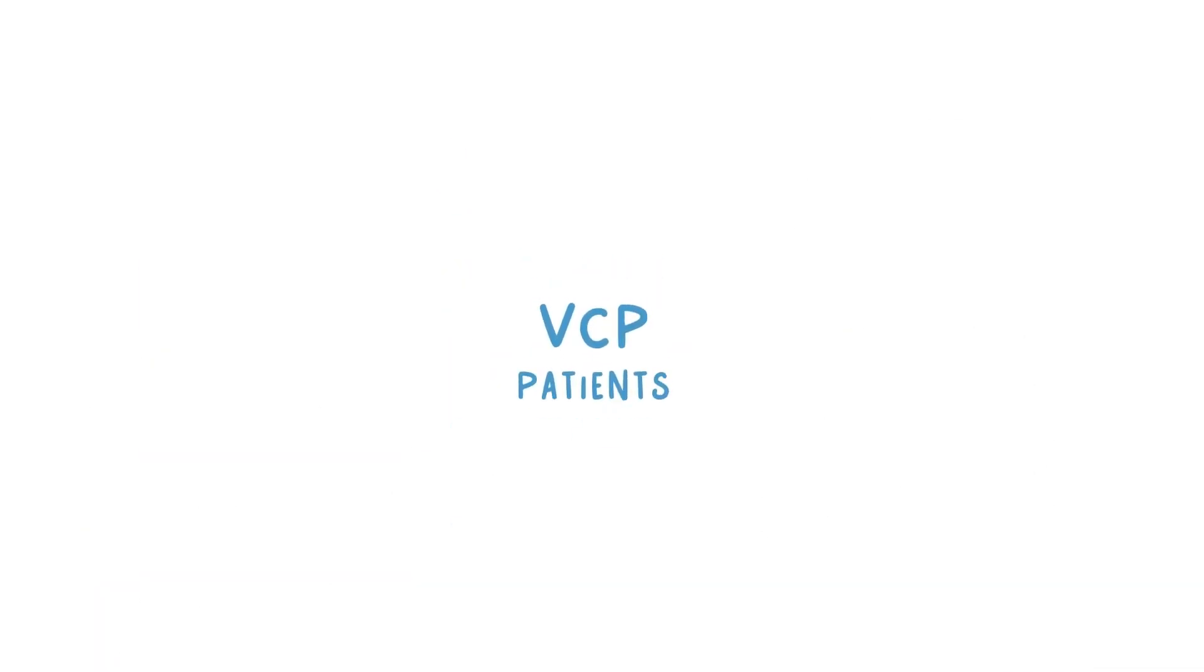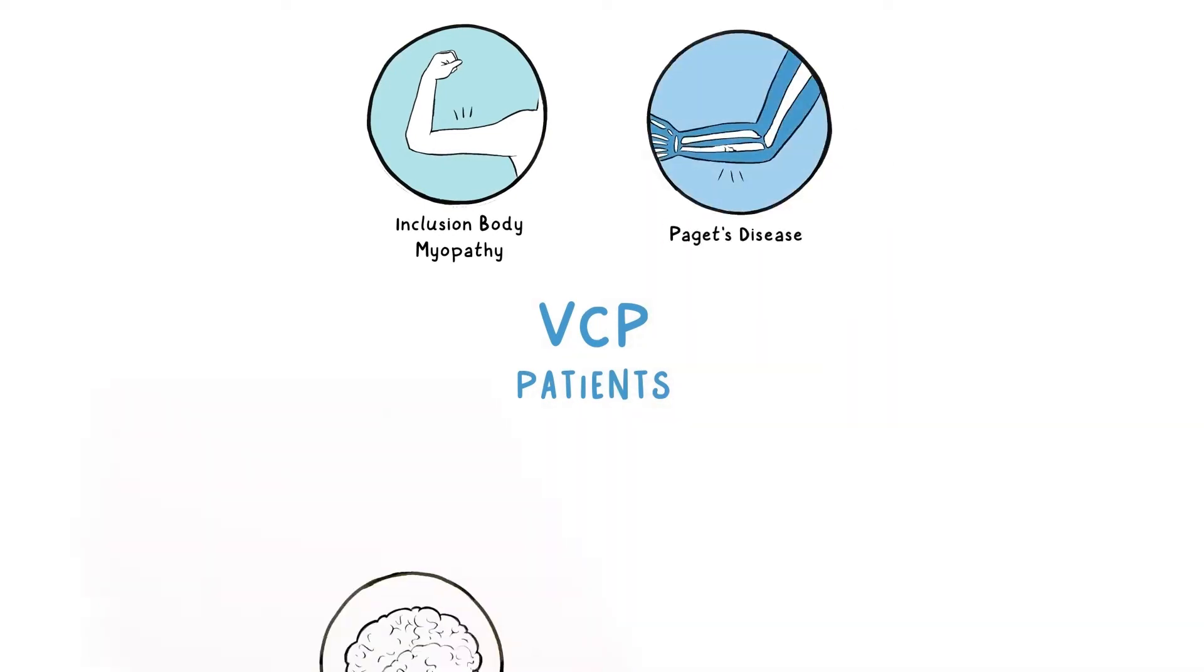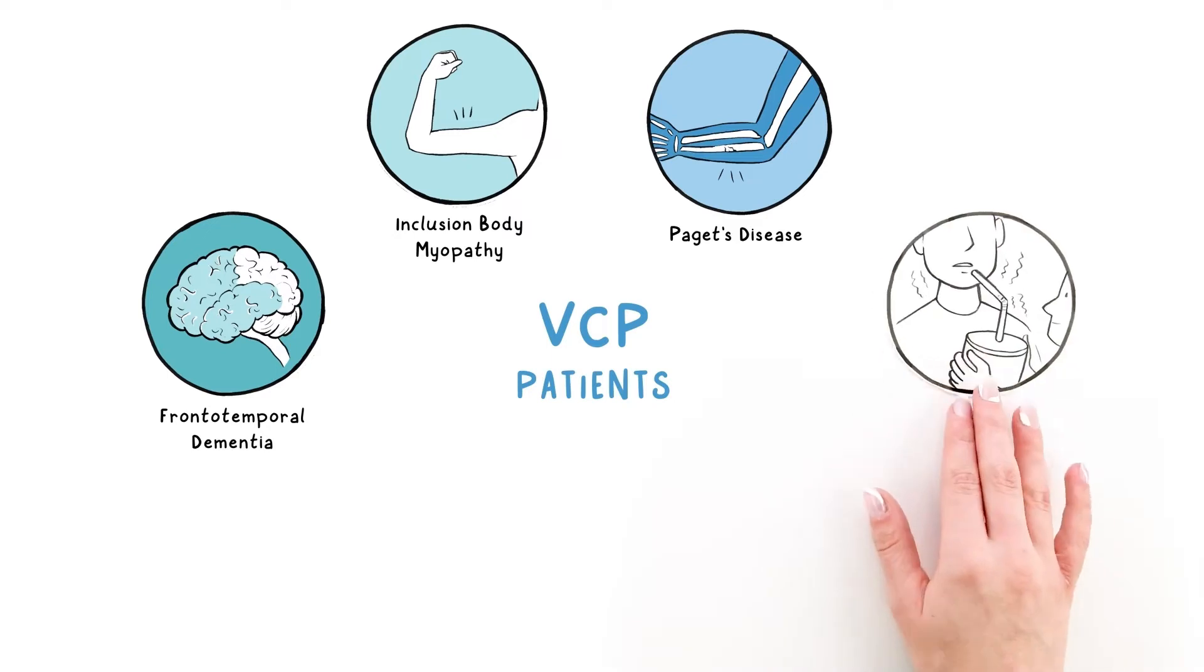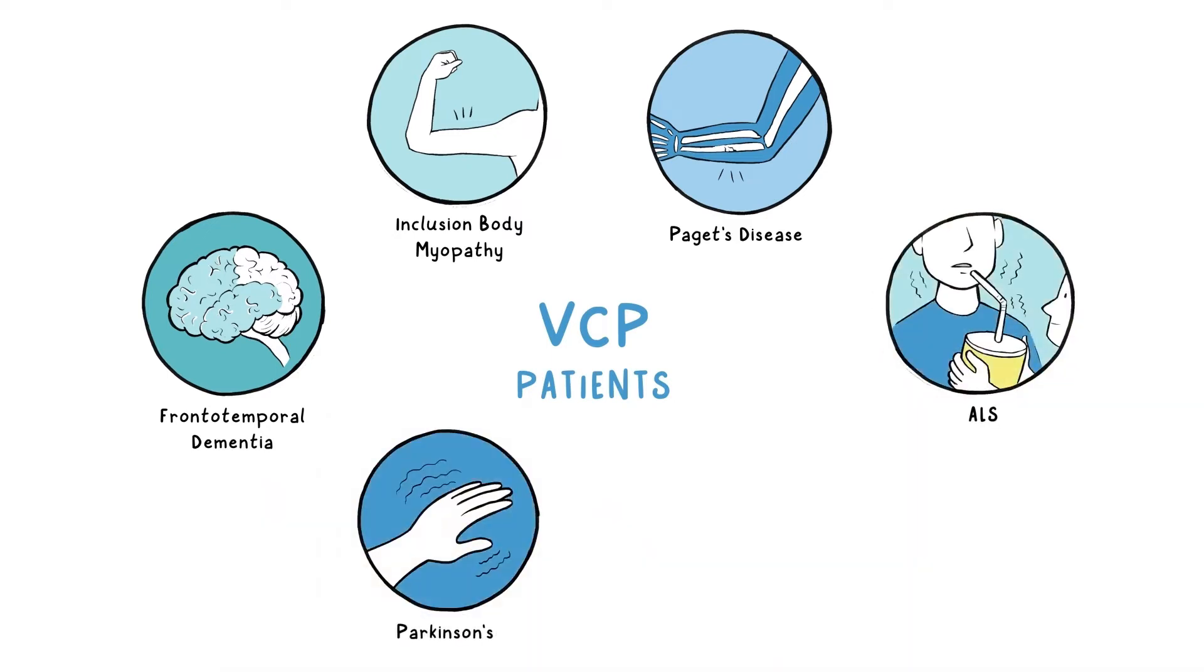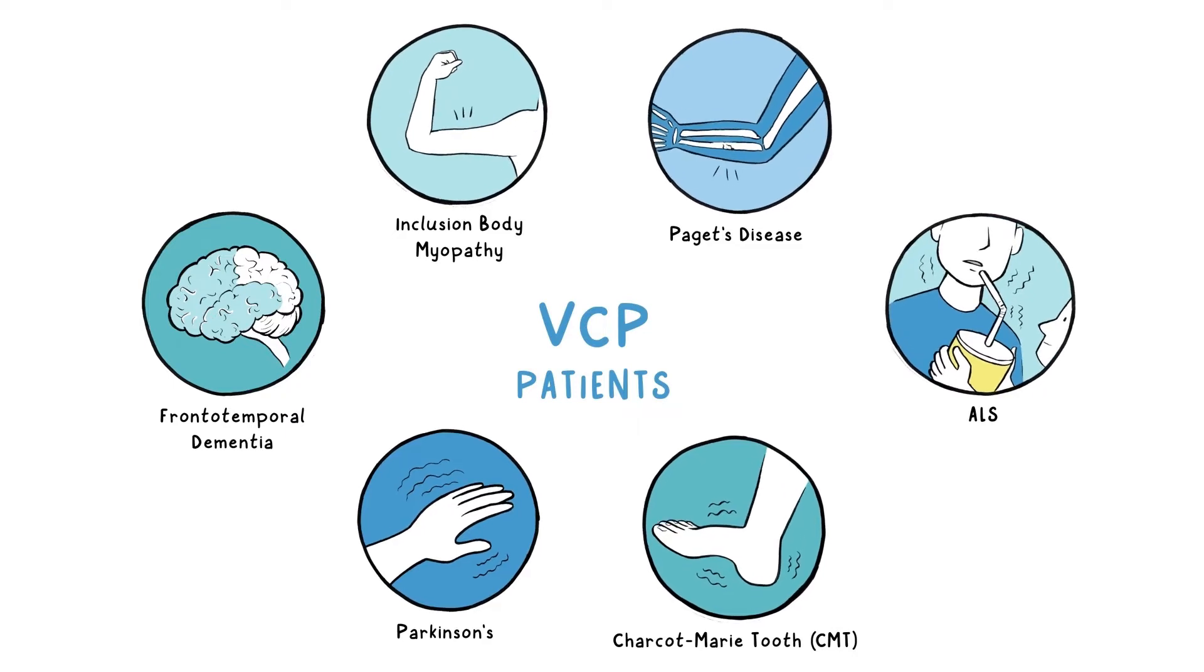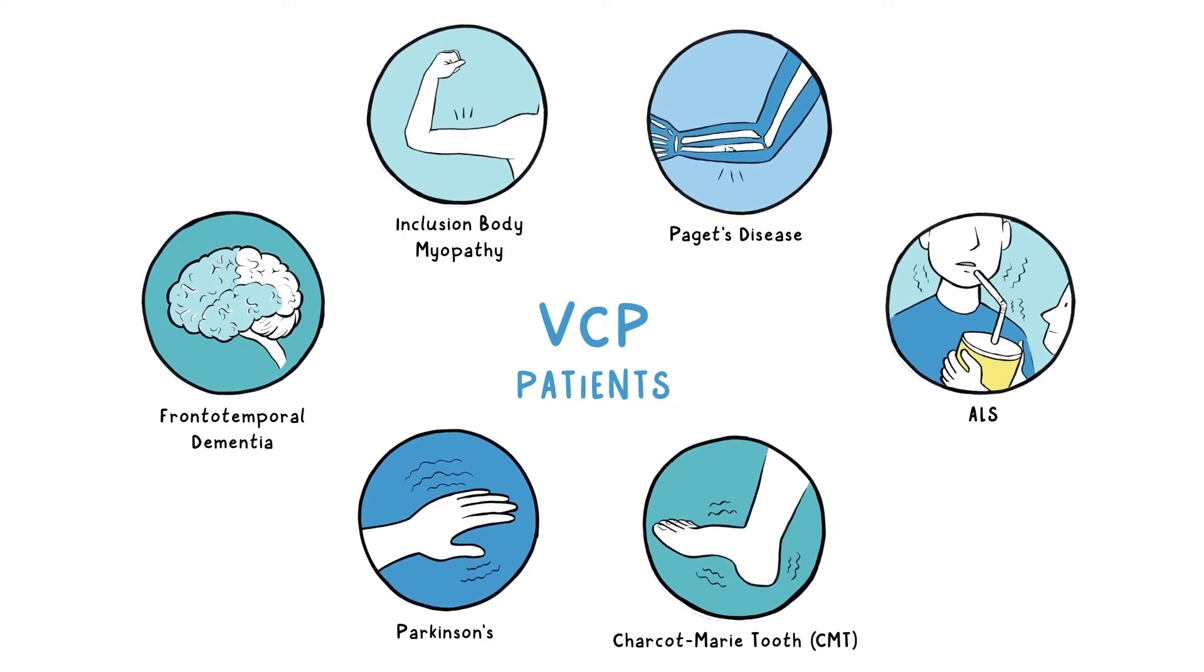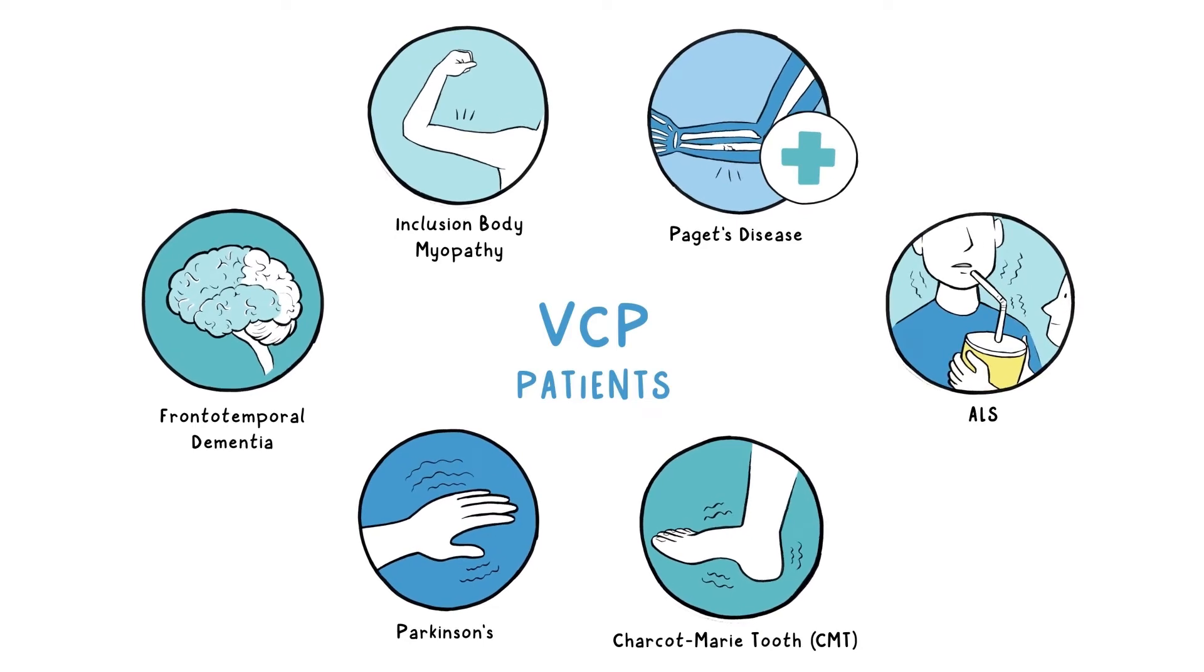VCP patients can develop one or more of the following diseases: inclusion body myopathy, early onset Paget's disease of bone, frontotemporal dementia, ALS, Parkinson's disease, and Charcot-Marie-Tooth. These diseases are progressive and debilitating, but some conditions, like Paget's, have treatments if detected early enough.